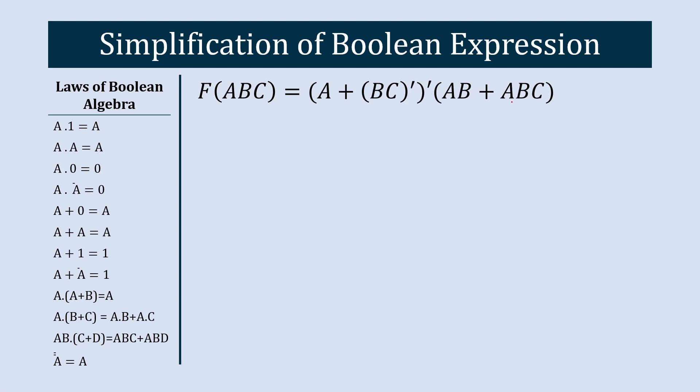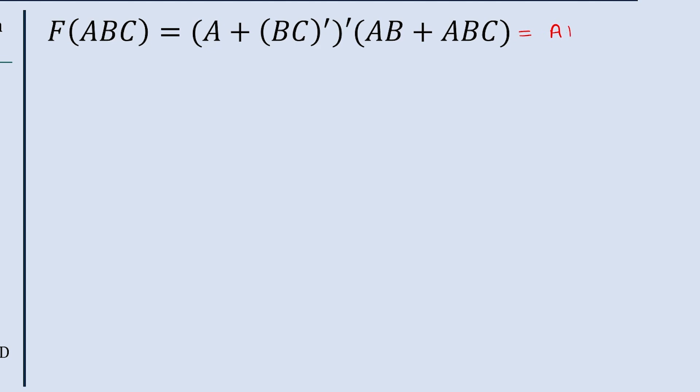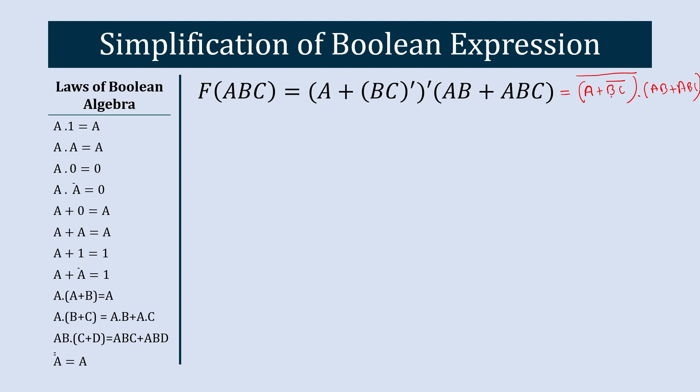Now here this dash means bar, right? So this equation simply looks like this: A plus BC bar, bracket over entire bar, into AB plus ABC. So consider this dash as bar.